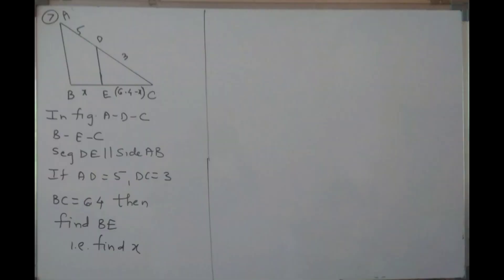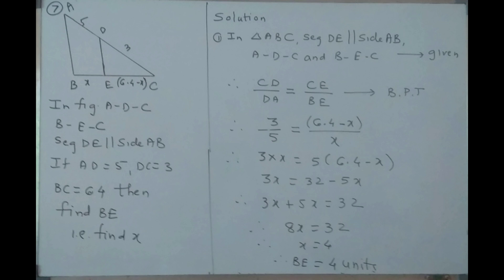Next question, question number 7. In triangle ABC, segment DE is parallel to side AB, with D on AC and E on BC. If AD is 5, CD is 3, and BC is equal to 6.4, then you have to find BE — that is, find X. Here in the triangle, a segment is given parallel to one side. Therefore we will use the Basic Proportionality Theorem. In triangle ABC, segment DE is parallel to side AB. Therefore CD upon DA is equal to CE upon BE. Reason: Basic Proportionality Theorem.